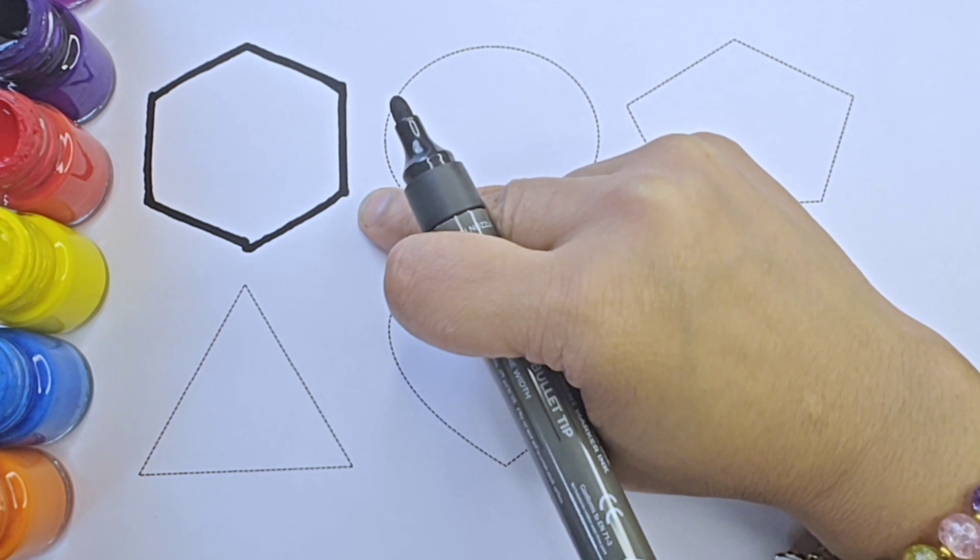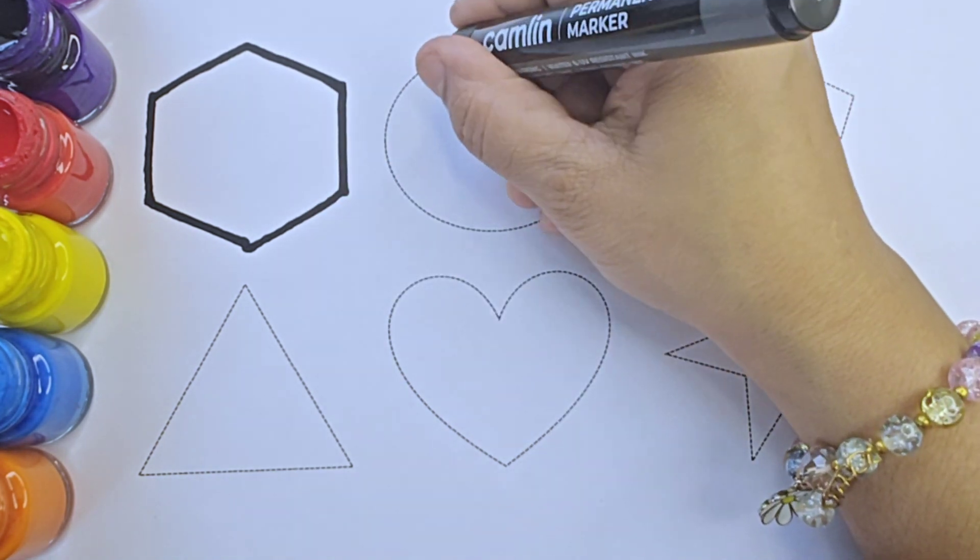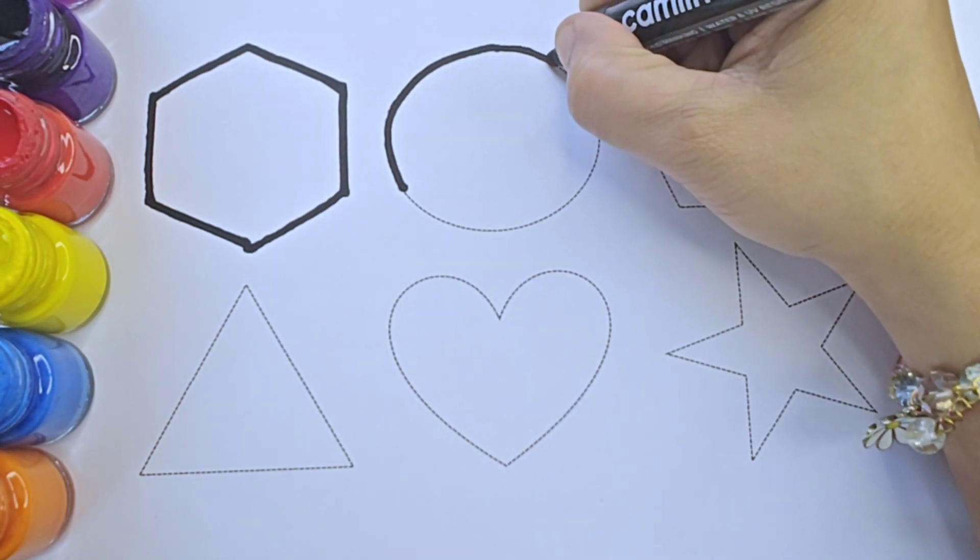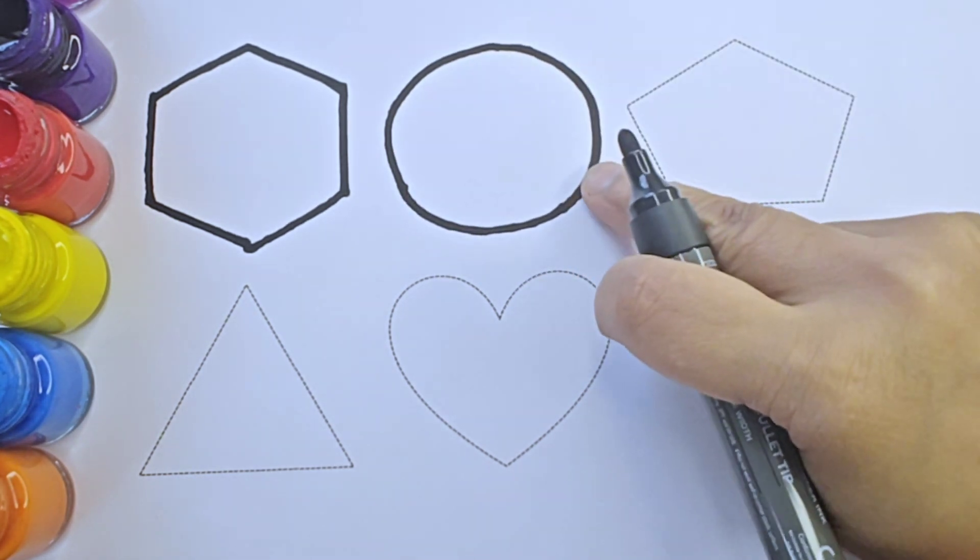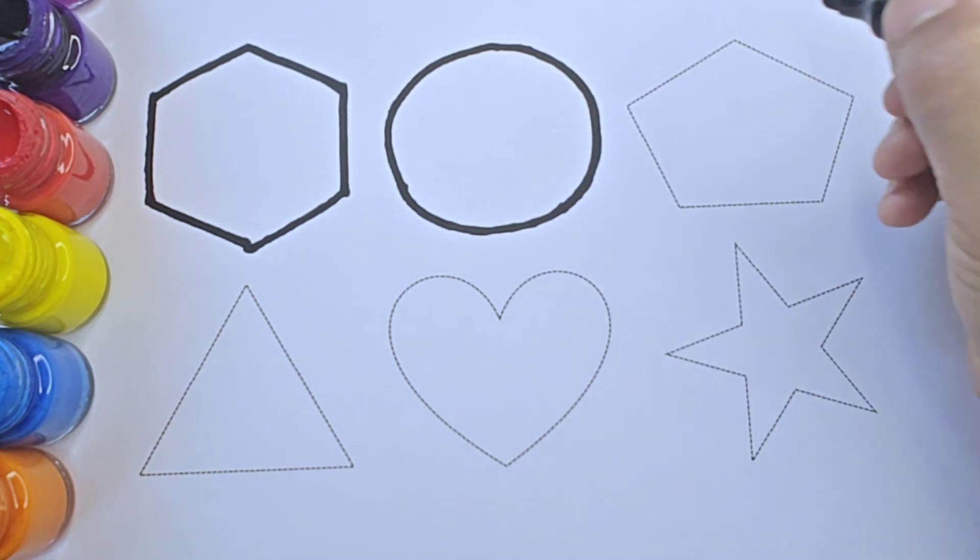This shape is hexagon, it has six sides. This shape is circle, it has no side.